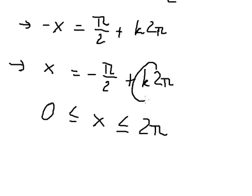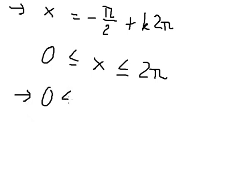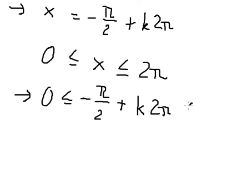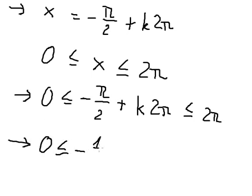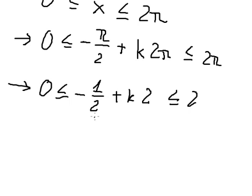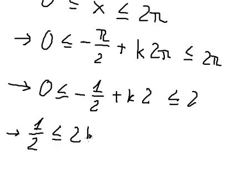We can find the value of K here. Next we divide both sides by π. Then I will put negative 1 over 2 on the left and on the right. So we have 1 over 2 here and 2K here. Number 2 plus 1 over 2 gives us 5 over 2.